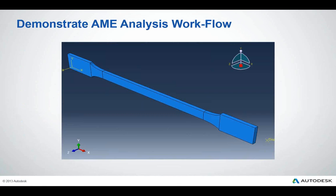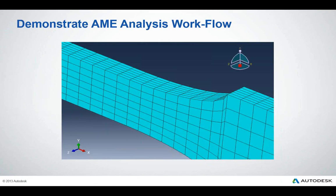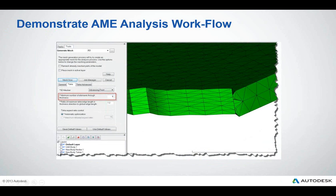Here we have our structural model within the Abacus environment. We can see the meshed part, and zooming in we can see the structured mesh and the elements through the thickness. We can see about six elements through the thickness. Here we can also see output from the Moldflow environment where the number of elements through the thickness is also six. A quick tip: when doing this type of work in AME, we want to make sure that our structural file has the same or greater number of element layers through the thickness as our Moldflow simulation.